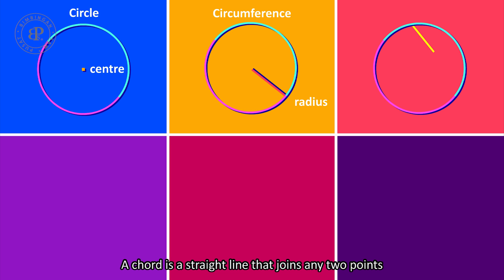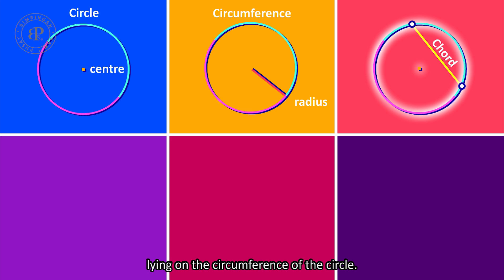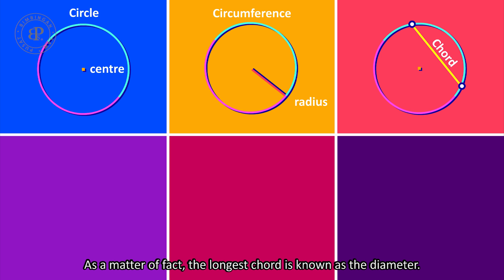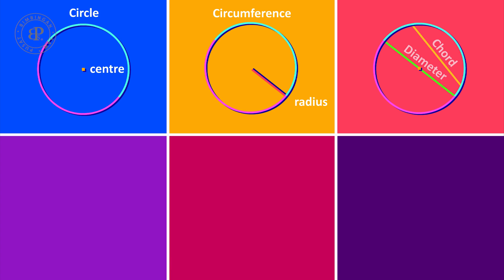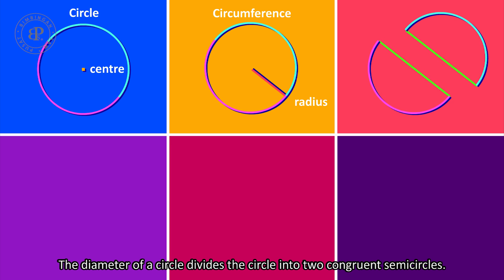A chord is a straight line that joins any two points lying on the circumference of the circle. The longest chord is known as the diameter. The diameter of a circle divides the circle into two congruent semicircles.